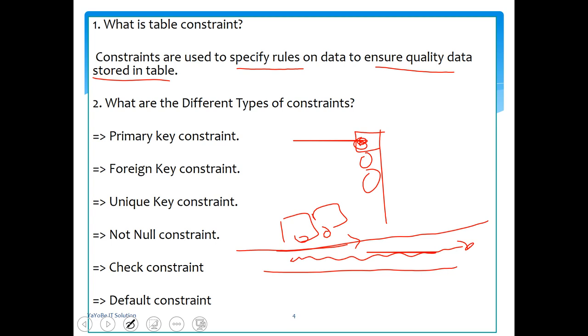Now what are the different types of constraints? Here we have different types of constraints: primary key constraint, then the next step is what are the different types of constraint.